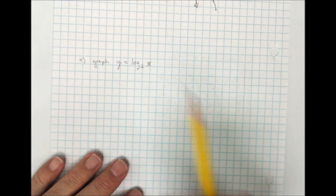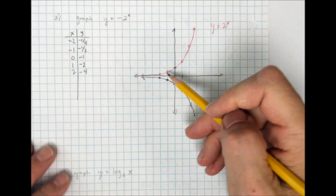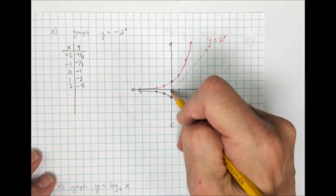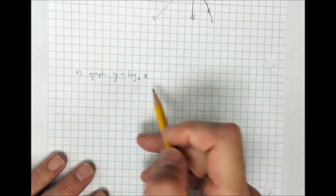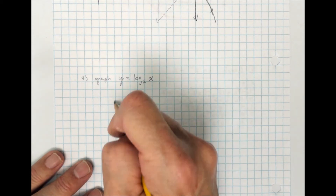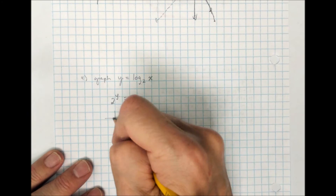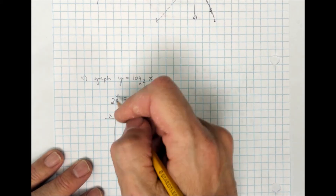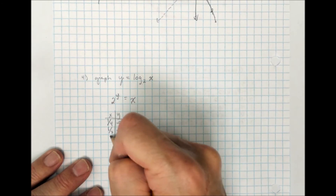To graph y equals log base 2 of x, I already have y equals 2 to the x in red, so I can reflect it in the line y equals x. Or convert to exponential form: 2 to the y equals x. Plug in y values of negative 2, negative 1, 0, 1, and 2 to get x values of one-fourth, one-half, 1, 2, and 4 respectively.